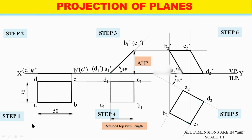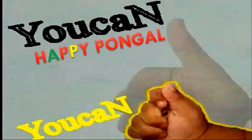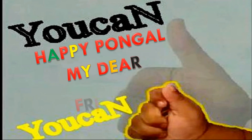At the end, give a heading and at the bottom of the page write 'All dimensions are in mm' and the scale. The scale is 1:1 because we drew the actual size values — the 50×30 rectangle is drawn at 50×30 in the diagram. If the dimensions were 500×300, we would use a different scale. Thank you for learning here — hit the like button if you found this content useful.